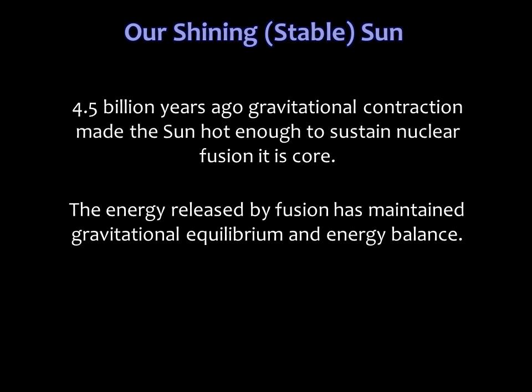Our sun shines so brightly because 4.5 billion years ago its gravitational contraction made the sun hot enough to sustain nuclear fusion in its core. Ever since, the energy released by fusion has maintained gravitational equilibrium and energy balance within the sun, keeping it shining steadily.